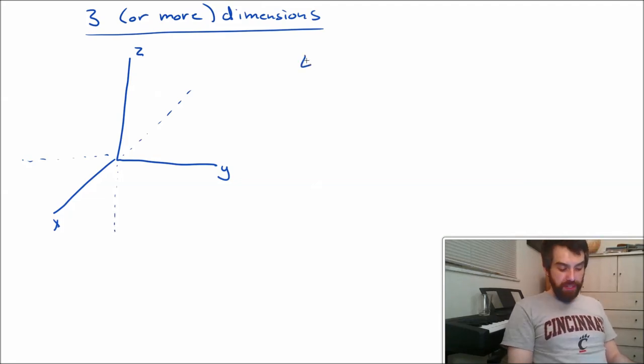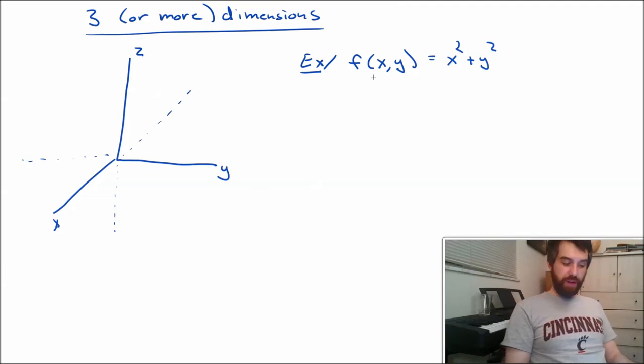So let me suppose that I gave you a function, not of one variable, but a function of two variables, a function of x and y. A standard example might be x squared plus y squared. And I'm going to think of x and y as my independent variables, and they are going to be equal to a variable z, which is going to be my dependent variable. Now, how do I graph this thing?